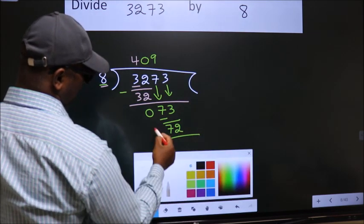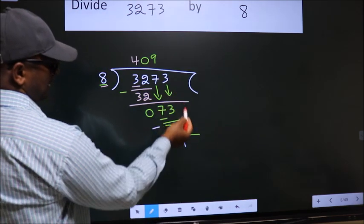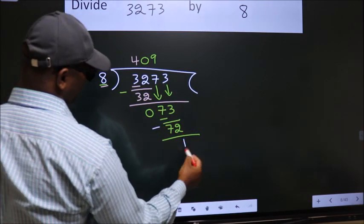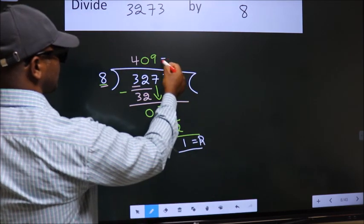Now we subtract. We get 1. No more numbers to bring it down, so we stop here. This is our remainder. This is our quotient.